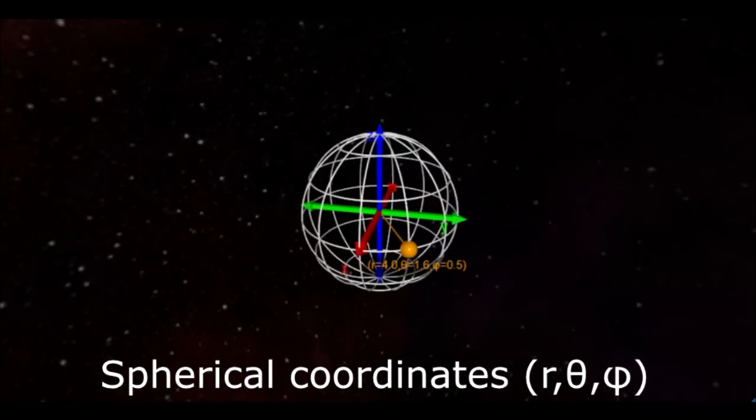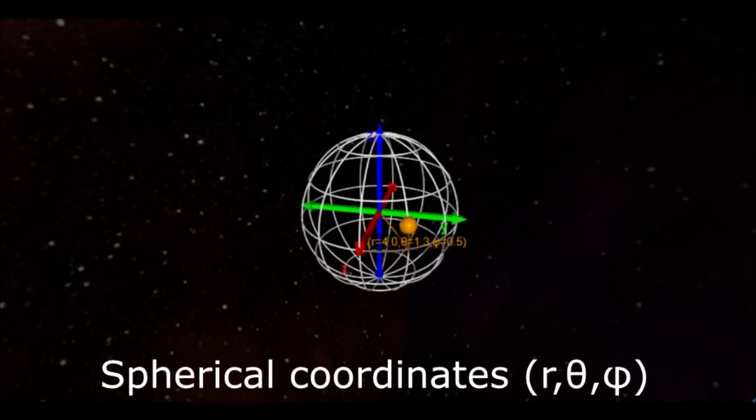The other two coordinates, theta and phi, are both angles. You can think of these as like latitude and longitude. Theta measures the angle the vector points downward from the Z axis. Phi measures the angle the vector makes around the XY plane, just like it did in cylindrical coordinates.